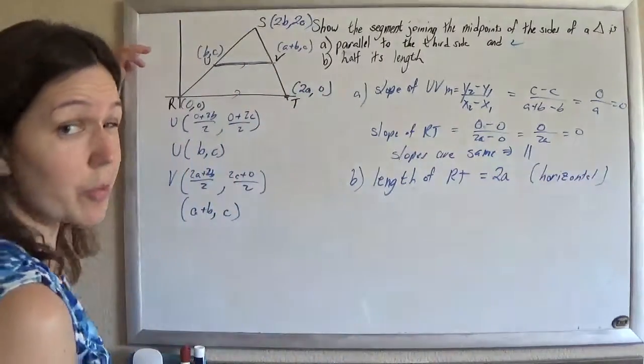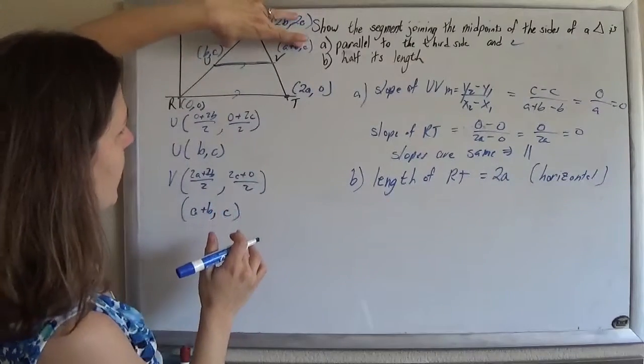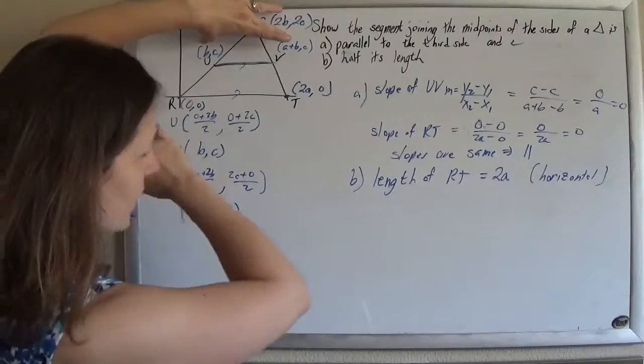And I think in their notes, they write just it's horizontal. I mean, you could do a distance formula if you wanted to, but it's like, nah, I can count this. I mean, these have both the same y-coordinates, so it's definitely horizontal.